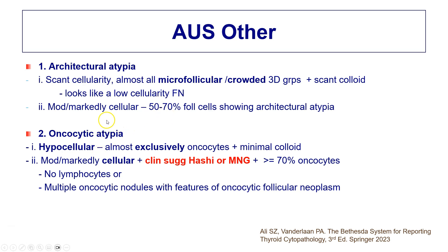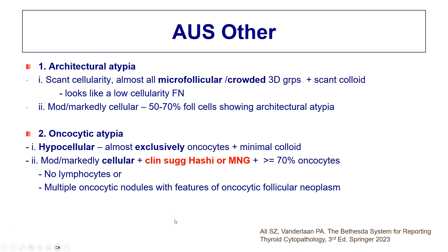We also have oncocytic atypia, with a separate video describing an approach to oncocytic lesions in the thyroid gland. There are some possible scenarios: firstly, if the smears are hypocellular but almost exclusively composed of oncocytes with very little background colloid; and secondly, if there is higher cellularity but clinically benign features suggestive of Hashimoto thyroiditis or multinodular goiter with multiple nodules. If the clinical picture is that of benignity, this can go into the oncocytic atypia category.